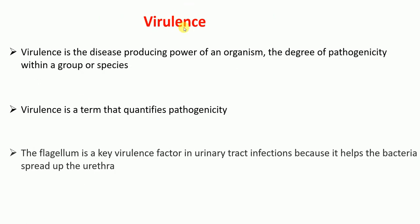Virulence is the disease-producing power of an organism, or the degree of pathogenicity within a group or species. So virulence is a term that quantifies pathogenicity — it is a quantitative term, not a qualitative term.